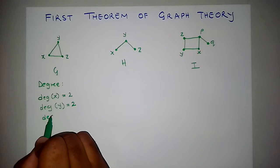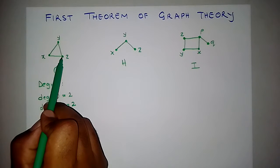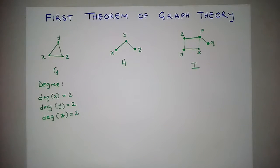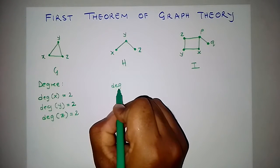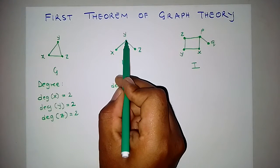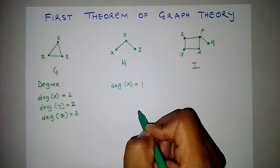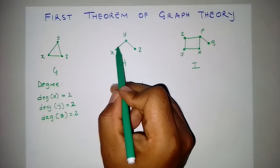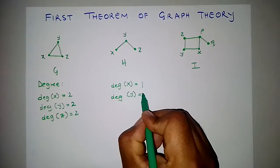Let's look at the degree of vertex Z in Graph H. There is vertex Z, and its degree is 1, 2 because it is adjacent to 2 vertices. Now the degree of vertex X in Graph H — X is adjacent to only 1 vertex, which is Y — so the degree of vertex X is 1. The degree of vertex Y is 1, 2, because Y is adjacent to 2 vertices: X and Z. So it's 2.